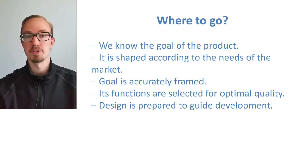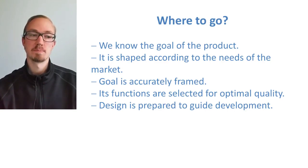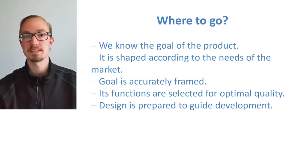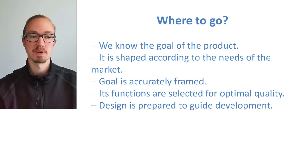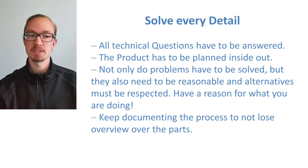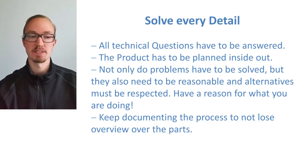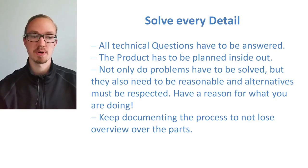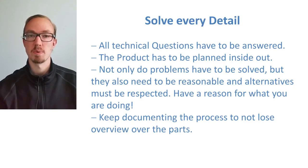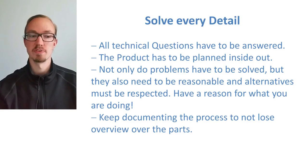Now we basically have these two endpoints and we just have to connect them in a line. We have our rails — left and right from the requirement list — and now it's just about doing the work. It's important to solve it in every detail, so all technical questions have to be answered. The product has to be planned inside out, and not only do problems have to be solved, but they also need to be reasonable and alternatives must be considered. You need to have a reason for what you are doing, and keep documenting the process to not get overwhelmed and lose overview over the parts.